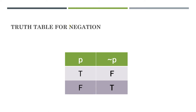That is a truth table for negation. So if the value of P is true, then we have false. And then if the value of P is false, then the negation would be true.